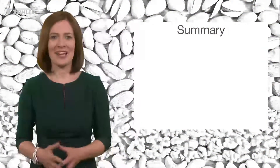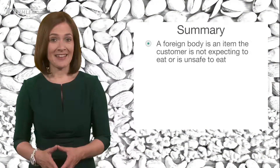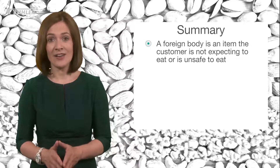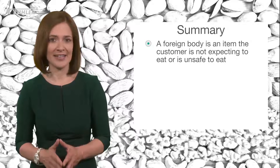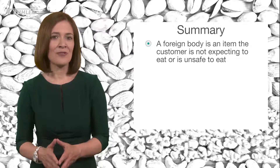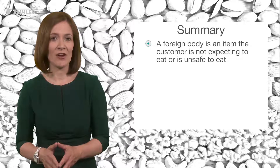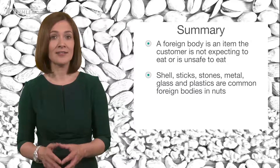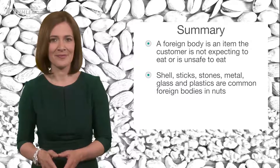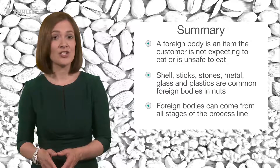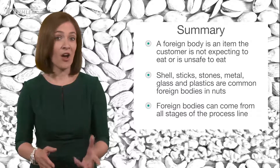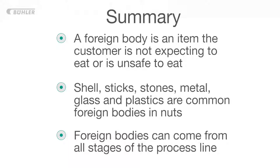Let's recap what we've learnt. A foreign body is an item that the customer is not expecting to eat or that is considered unsafe to eat. The most common physical foreign bodies found in nuts are shell, sticks, stones, metal, glass and plastics. They come into contact with nuts during different stages of processing: field and harvest, collection and transport, food processing and retail stages.